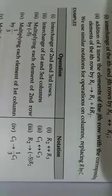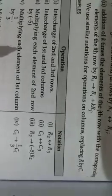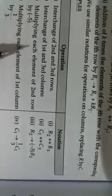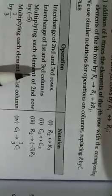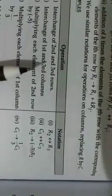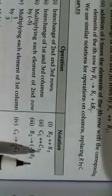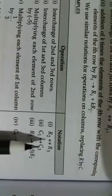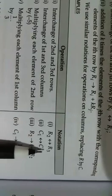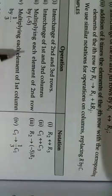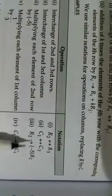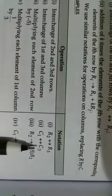First step is we will interchange the rows and columns. You can do this by interchanging second and third rows, and we will write R2 tends to R3. Or interchange first and third columns, C1 to C3, as we have learned in the matrix chapter.